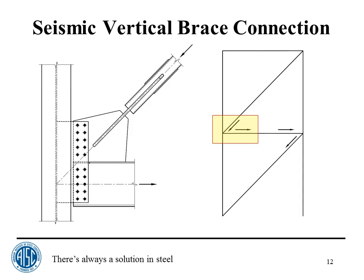Tonight we'll look at an extended shear plate type connection. This is part of a frame where our connection is at a corner. If the two braces are the same and there's not much diaphragm force at this floor, the forces we would be dealing with would be approximately the same. When working through the design, I'm considering both a top gusset and possibly a bottom gusset simultaneously, so some limit states will be checked for both.